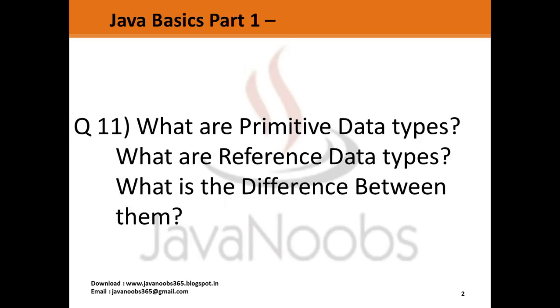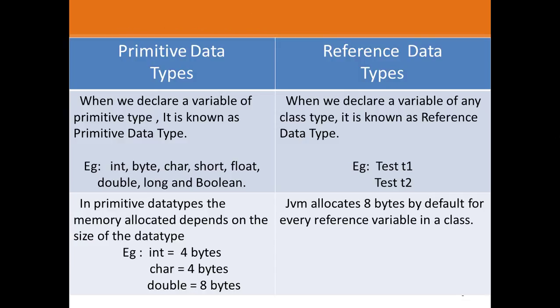When we declare a variable of primitive type, it is known as primitive data type. In Java there are eight data types: int, byte, char, short, float, double, long, and boolean.